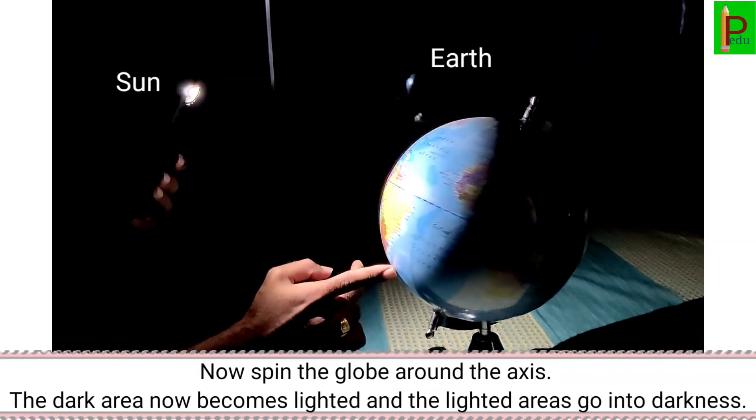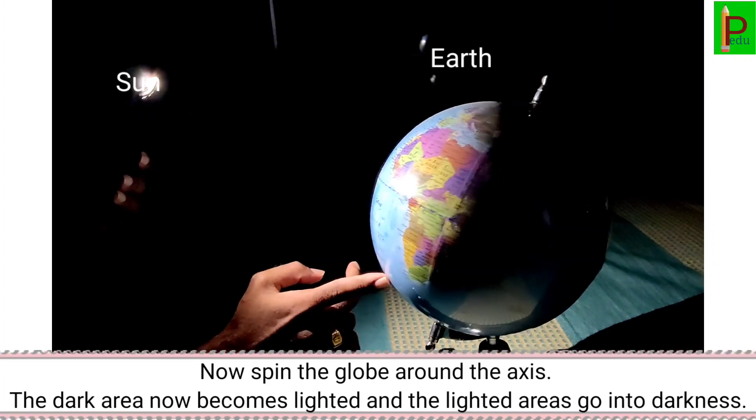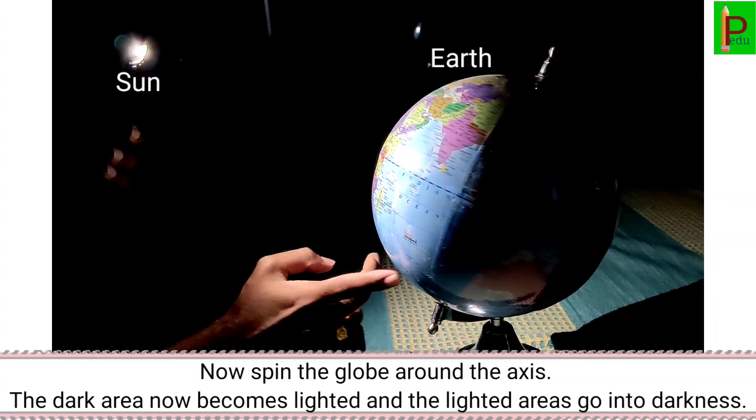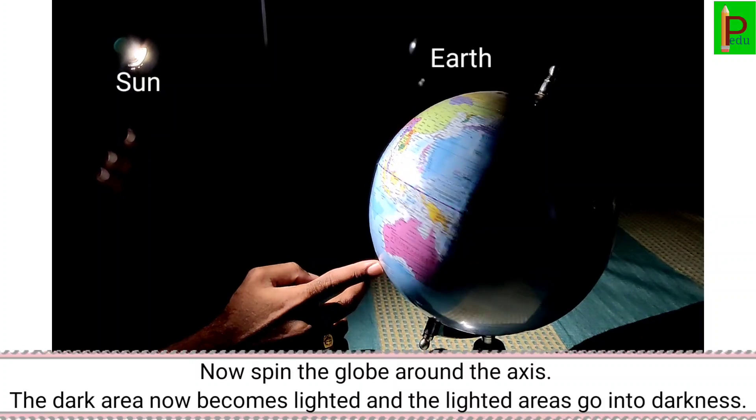Now spin the globe around the axis. The dark area now becomes lighted and the lighted areas go into darkness.